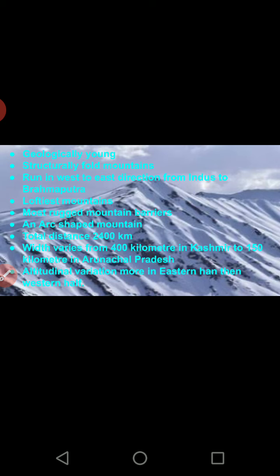The Himalayas have an arc shape — not straight but covering northwest, north, and northeast. The total distance of the Himalayas is 2400 kilometers. In terms of width, there are many variations: 400 kilometers wide in Kashmir, becoming narrow — about 150 kilometers — towards the eastern or northeastern side.